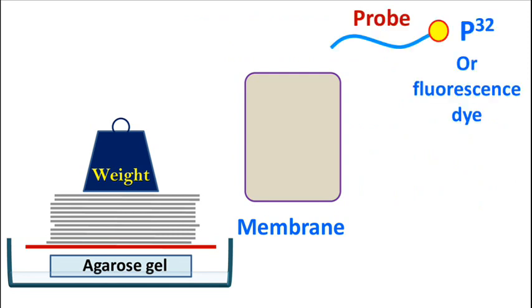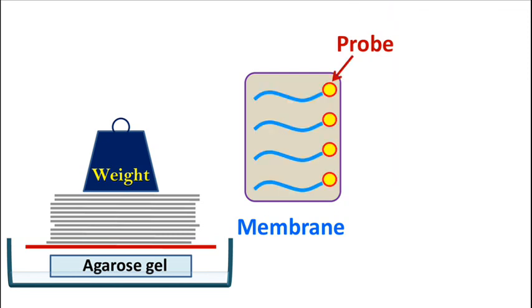The probe has a nucleotide sequence complementary to the desired DNA fragment which is to be detected. The probe is usually labeled with P32 or a fluorescence dye.